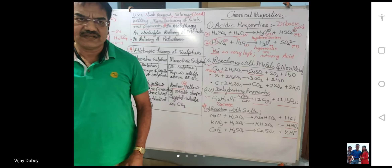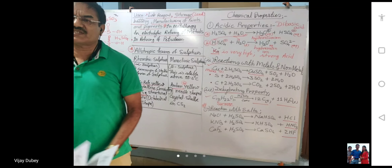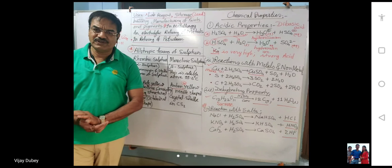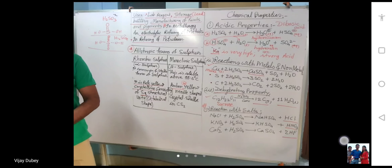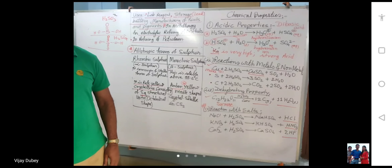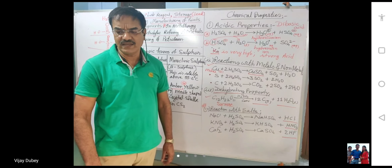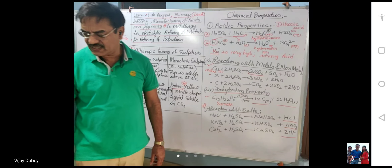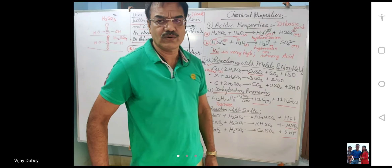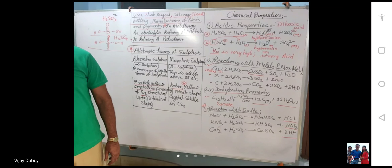We have completed the chemistry of Group 16 elements. Tomorrow we will take up the chemistry of Group 17 elements — the halogens. There will be quite important questions from Group 17. See you tomorrow.